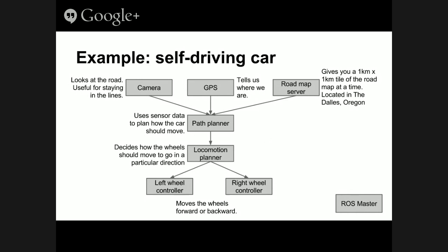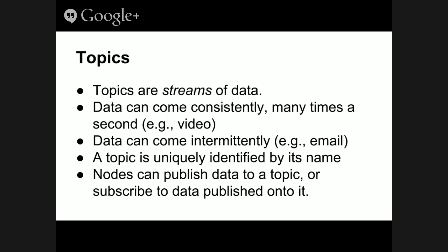The path planner assumes it gets a camera image and GPS location, and given that it outputs some path. The bottom examples are like left and right wheel controllers — if you want to turn left on a two-wheeled robot, the left wheel goes backwards and the right wheel goes forward. If you want to turn in an arc, the left wheel turns more slowly and the right wheel turns faster. You can put all that logic in its own node. The more singular the task a node does, the better.